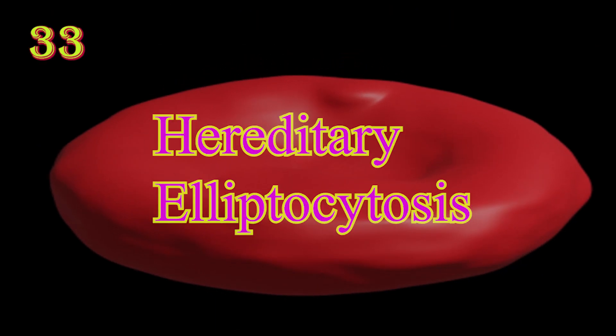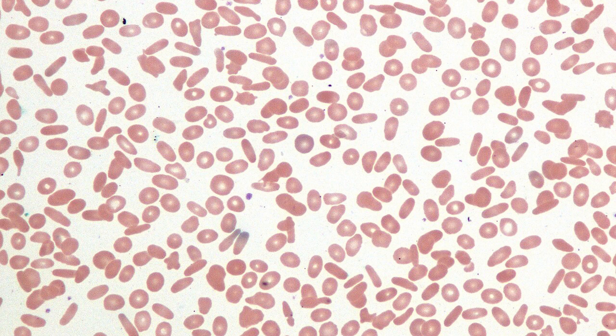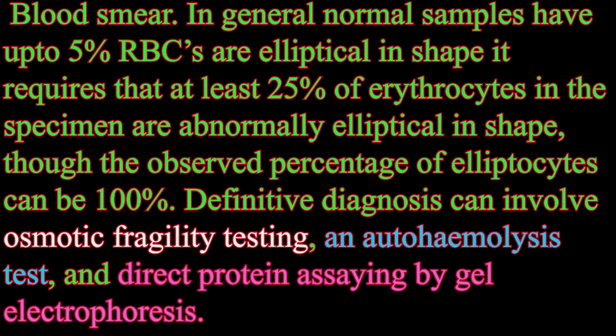Hereditary elliptocytosis, also known as ovalocytosis, is an inherited blood disorder in which RBCs are elliptical rather than the typical biconcave erythrocyte shape. It is one of many red cell membrane defects; in its severe forms it leads to hemolytic anemia.